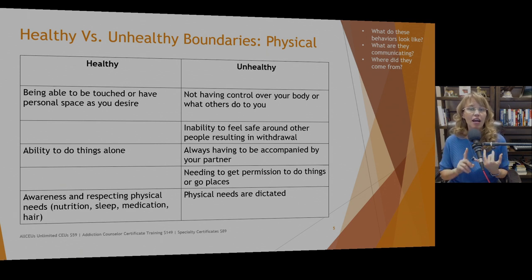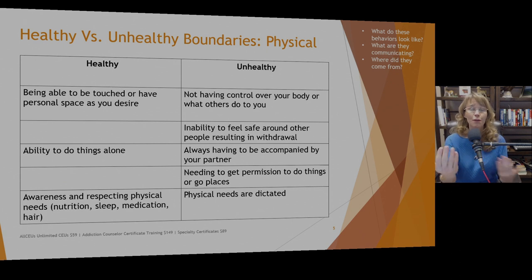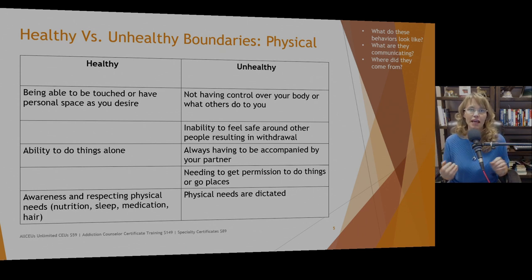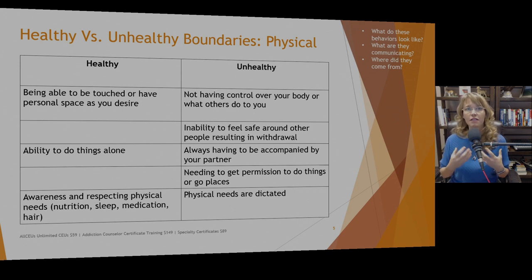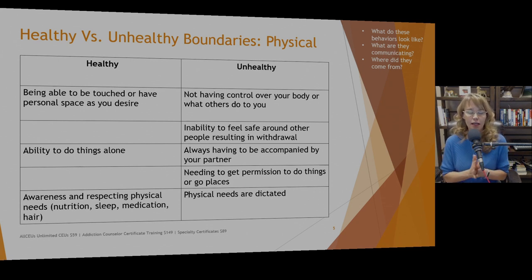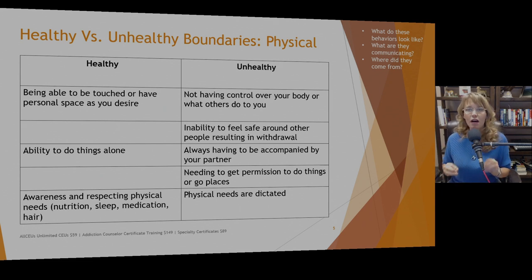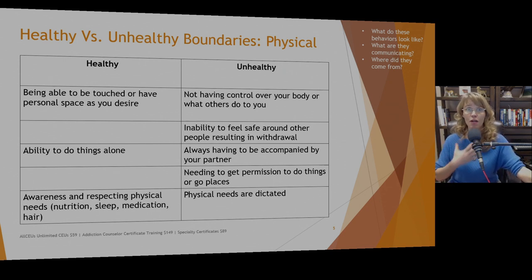When someone has healthy physical boundaries, they are able to be touched or have personal space as they desire. They can give and receive hugs but also respect personal space. Different cultures have different levels of personal space — in some cultures it's much closer, in others much further away. Eye contact is another form of physical boundary — in some cultures it's inappropriate to look an elder directly in the eye, while in others it's a sign of disrespect not to.